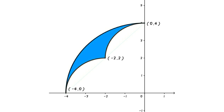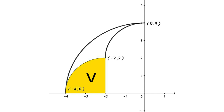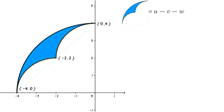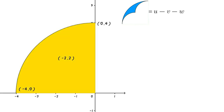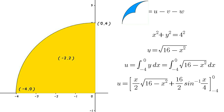Using integration: Redraw the figure on a coordinate system. Area of blue region equals U − V − W. The outer curve is a quarter circle centered at origin, so x² + y² = 16, giving y = √(16 − x²). Then U = ∫(−4 to 0) √(16 − x²) dx. Applying limits gives U = 0 − 8(−π/2) = 4π.